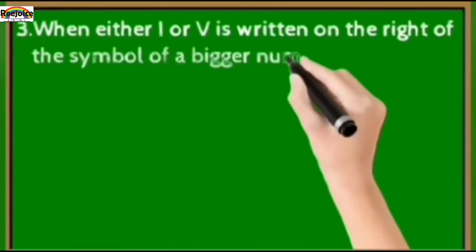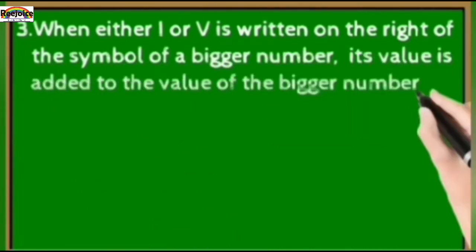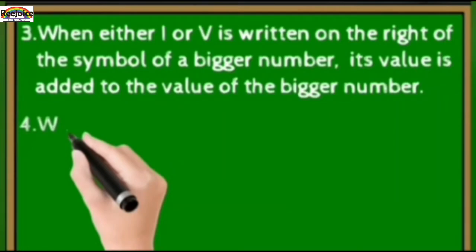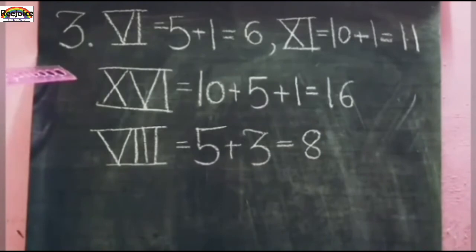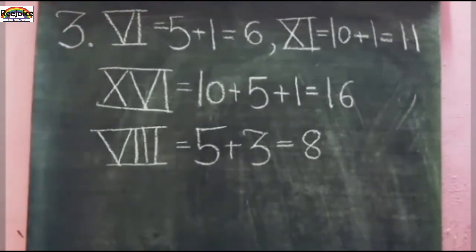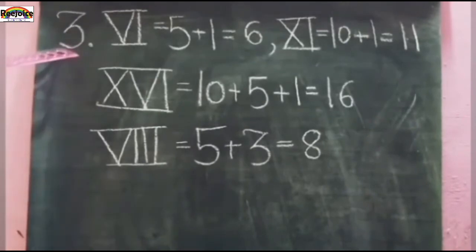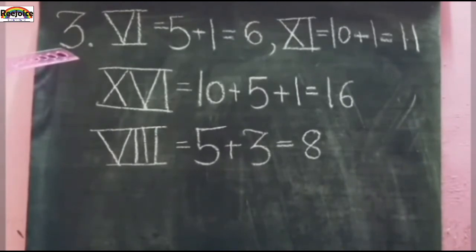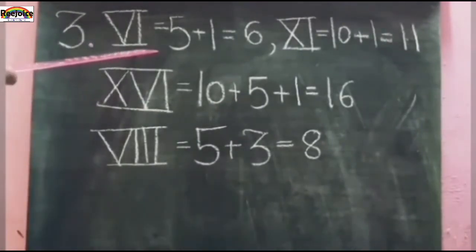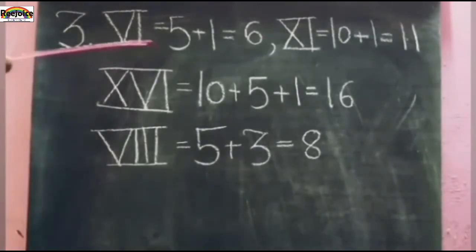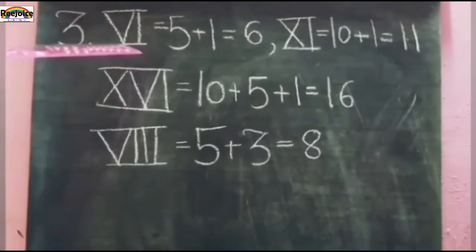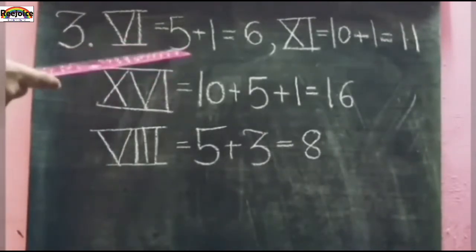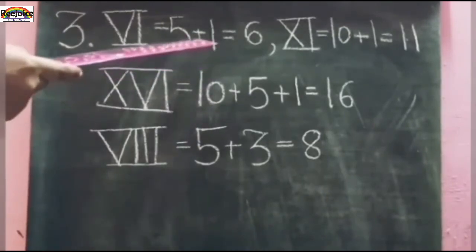Rule number 3: when either I or V is written on the right of the symbol of the bigger number, its value is added to the value of the bigger number. Rule 3 में — either I or V कोई भी bigger number के right side में होता है तो always उस number से add होगा। Example: VI — V बड़ा है I से, and I bigger number के right side में है, तो V for 5 plus I for 1, so 5 plus 1 equals 6.